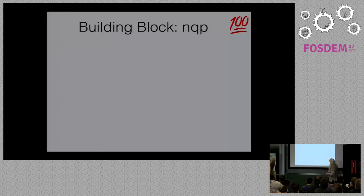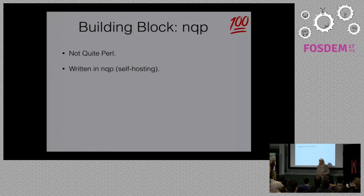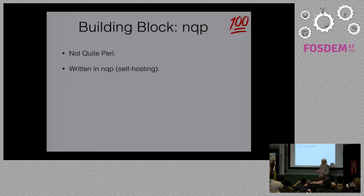The next building block is NQP — Not Quite Perl. It's basically the assembly language of Rakudo Perl 6. It is written in NQP — it's self-hosting, which is quite a feat in itself. The nice thing about it is that MoarVM is like one back-end for NQP. So if you want to have another back-end for Rakudo Perl 6, most of the work you need to do is make it work with NQP.